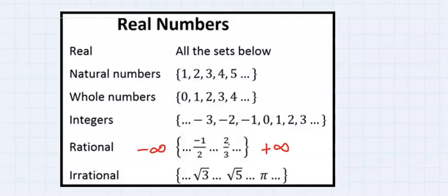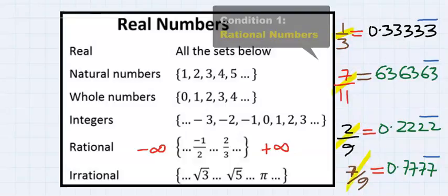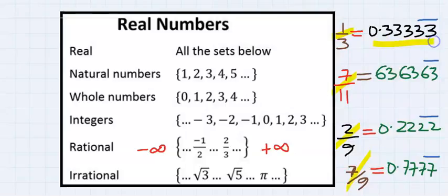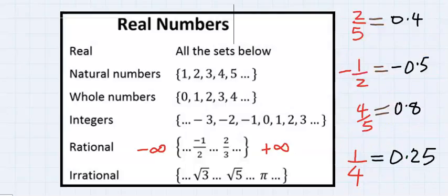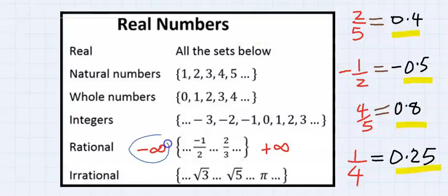That is, repeating, like 1 over 3, 7 over 11, 2 over 9, 7 over 9, and so on, where the numbers are repeating. Or the answer produced is short and not reoccurring. It can be negative or positive.